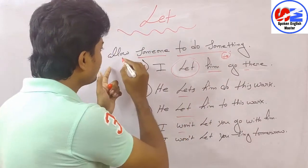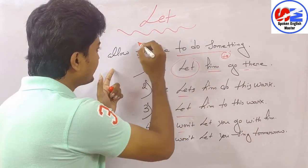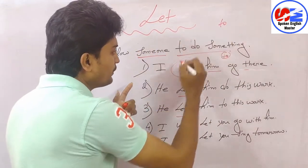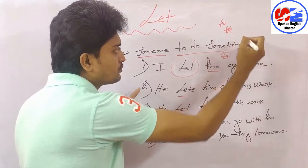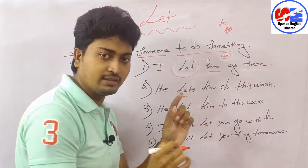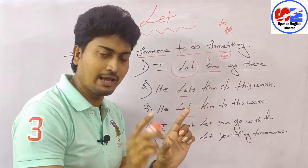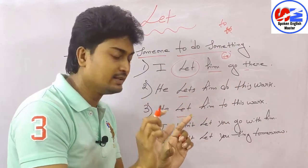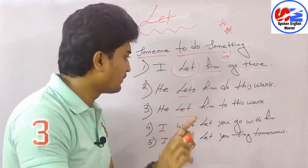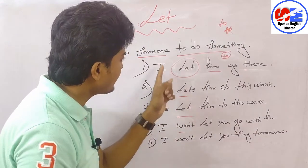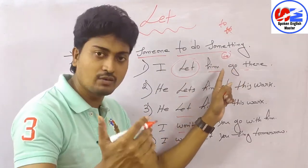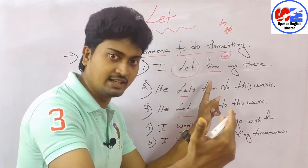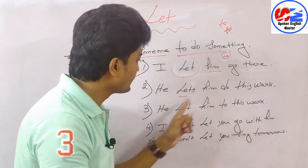When we use ALLOW, that time we use 'to.' But when we use LET, that time we don't use 'to.' So this is the difference — we have to keep this thing in our mind. So: 'I'll let him go there.' [Hindi: Main usse wahaan jane deta hoon.]